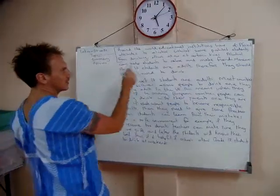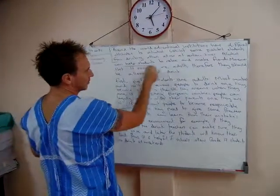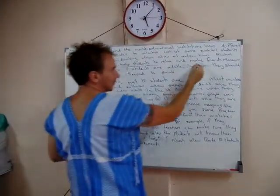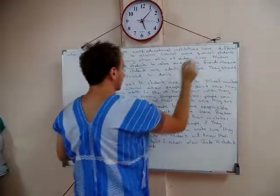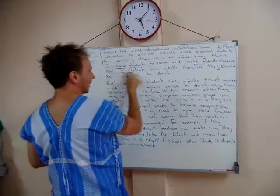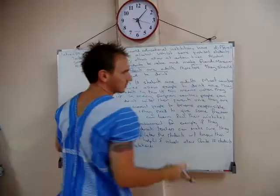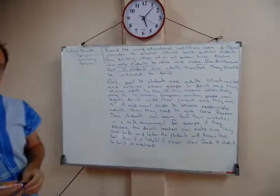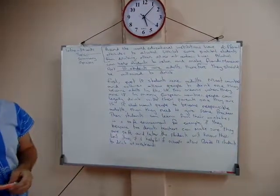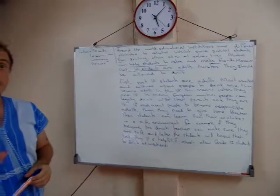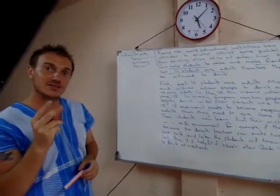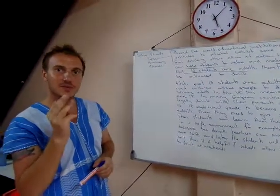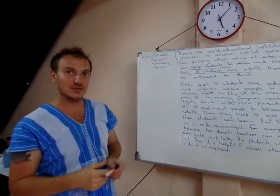Secondly, summarise. Help students relax — that's one idea. Make friends — one idea. Adults — one idea. So here I have my three ideas. In two sentences, I summarise my three main points.